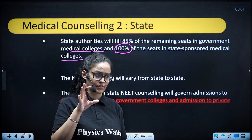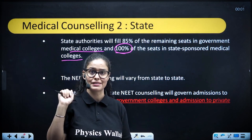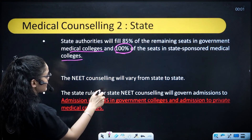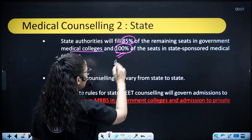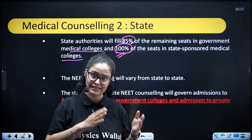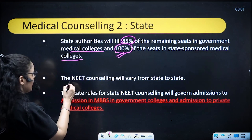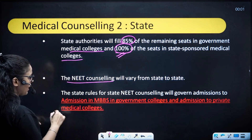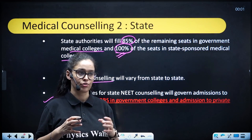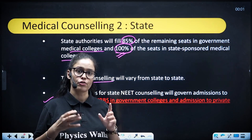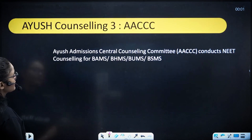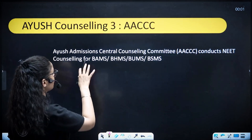Some closed states were discussed in the MCC video — the same rules apply here. In state counseling, 85% of seats are for the All India Quota rank and 100% of seats in state-sponsored and deemed/private universities in some states. State counseling will vary from state to state, so whether you're from Delhi, Uttarakhand, UP, Bihar, Karnataka, or Nagaland, you must visit your respective state website.